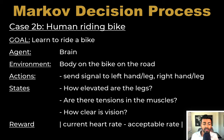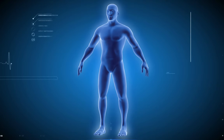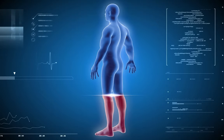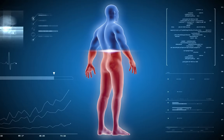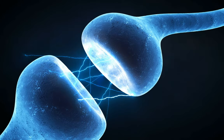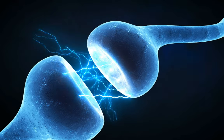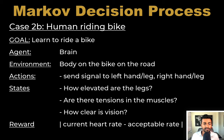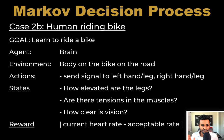An extreme example would frame it differently: the agent could be the brain and the environment is the body on the bike. The actions are signals sent to the left hand, right hand, left leg, and right leg. The state — a snapshot of the body — could include how elevated the legs and hands are, any muscle tensions, and how clear our vision is. The reward could be the absolute difference between the current heart rate and the acceptable heart rate for riding a bike. This shows how fluid the definition of agent and environment can be, even for the same problem.